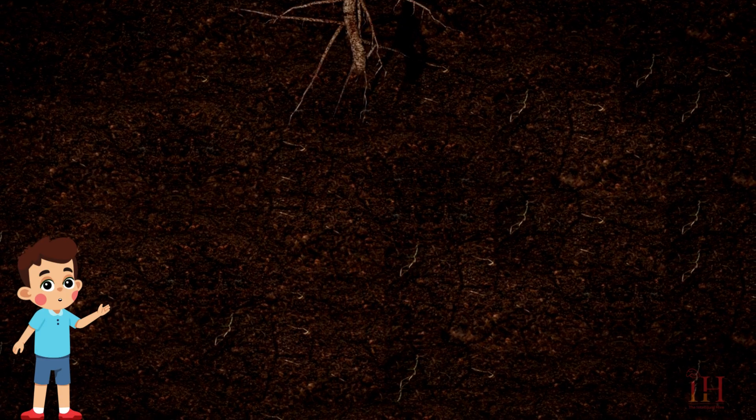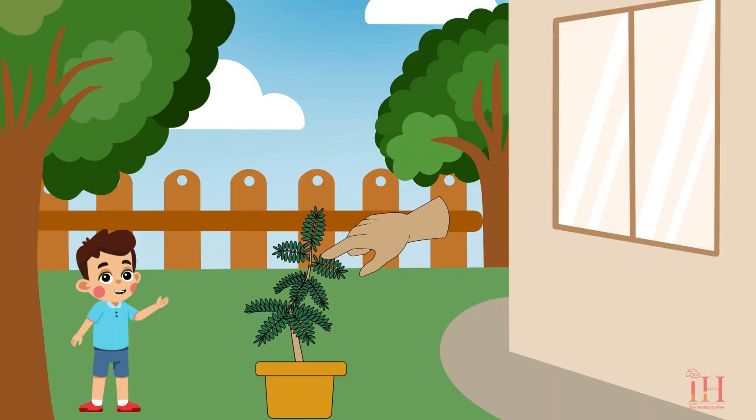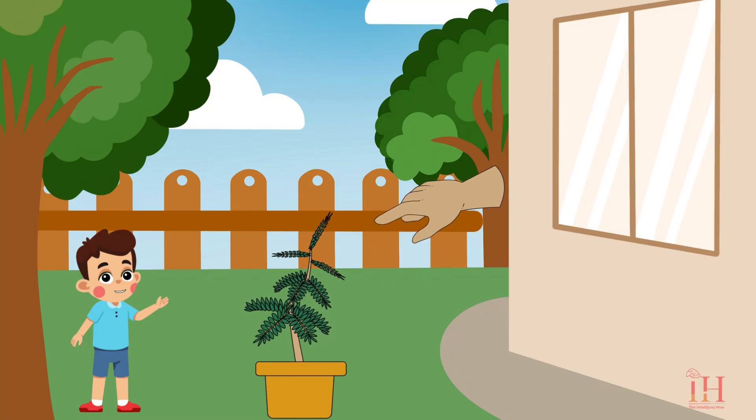Their roots grow down into the soil, a process called gravitropism. Some can even sense water and touch, like the mimosa plant, which closes its leaves when you touch it.